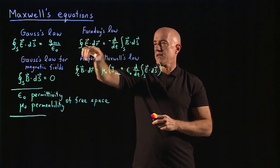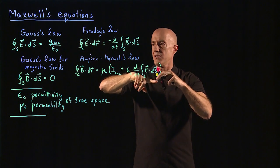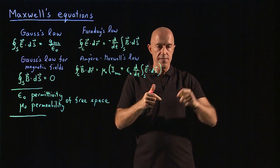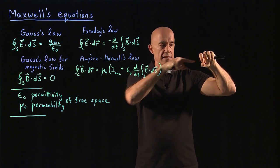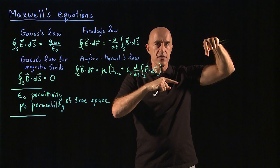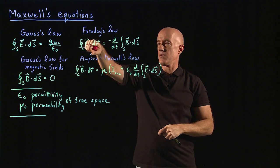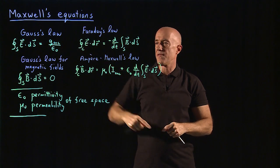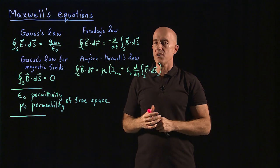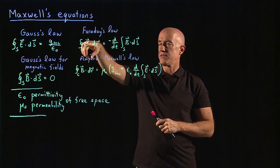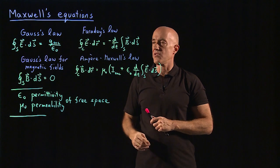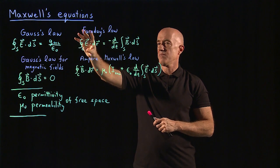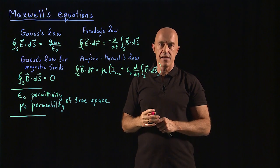Then Faraday's law: the integral of the electric field around a closed curve. So if you have a closed curve and then you have a magnet that you move in and out of this circular wire, then you have a time-varying change in B and you end up with an electric field — it actually causes a current to flow in the wire. That's Faraday's law, and it was important because it was the first time someone showed a connection between the electric field and the magnetic field.